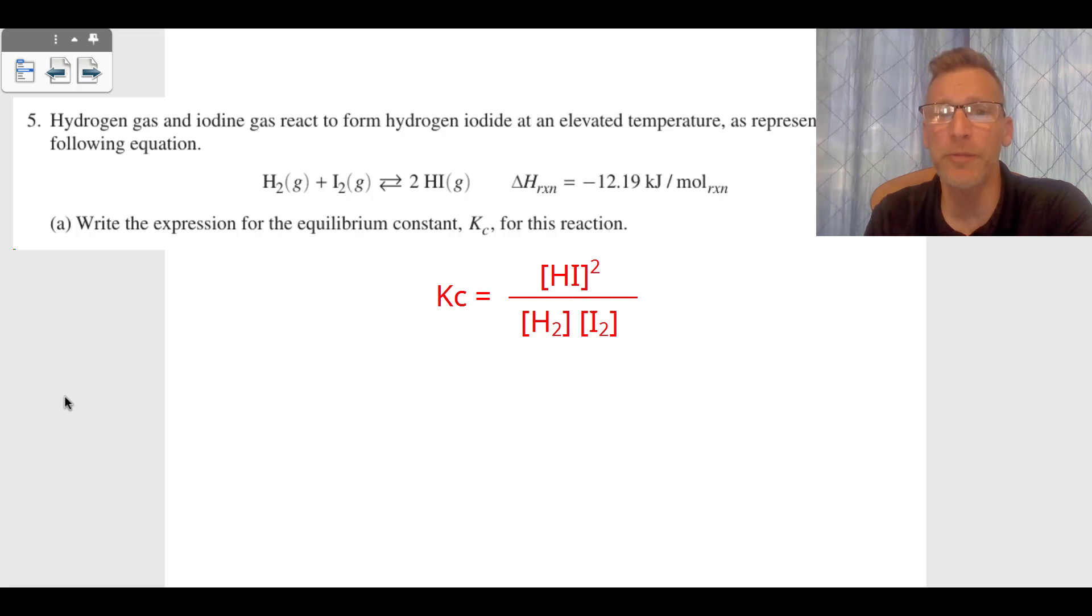Part A is asking for the equilibrium constant expression, which means I'm going to put the product HI in brackets on the numerator. It's going to be squared since there's two moles. On the denominator is H2 gas times the I2 gas, and that's going to be worth one point for Part A.